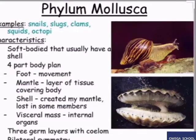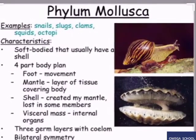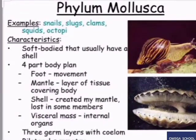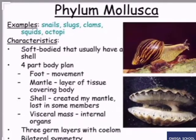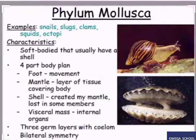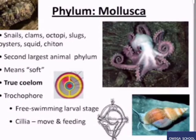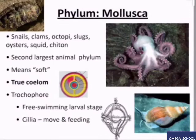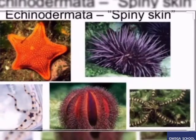The next one is the phylum Mollusca. Out of all invertebrates, the most intelligent ones are classified here — including the octopus and squid. They are soft-bodied animals and usually have a protective shell. The best examples of the phylum Mollusca are snails, octopus, and squid.